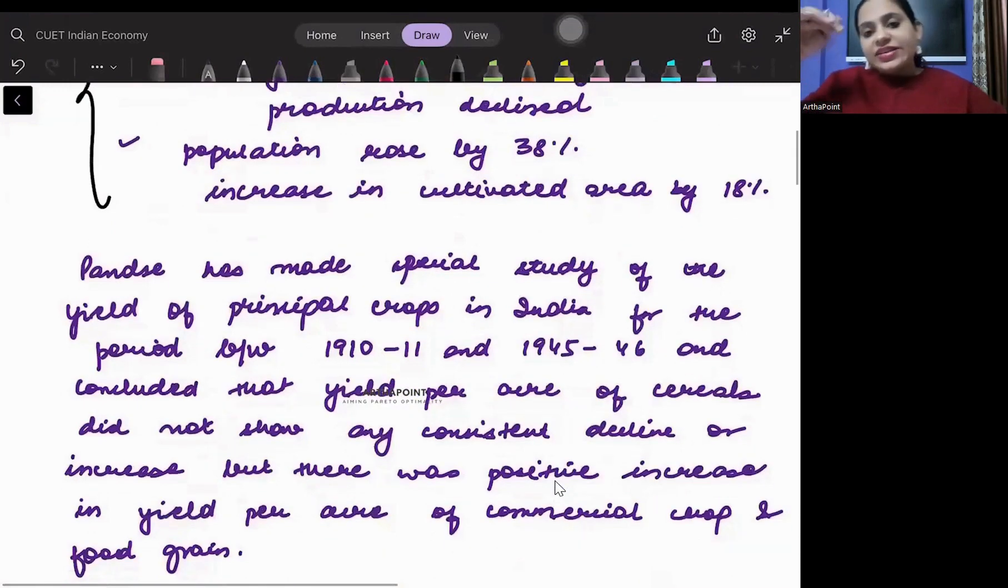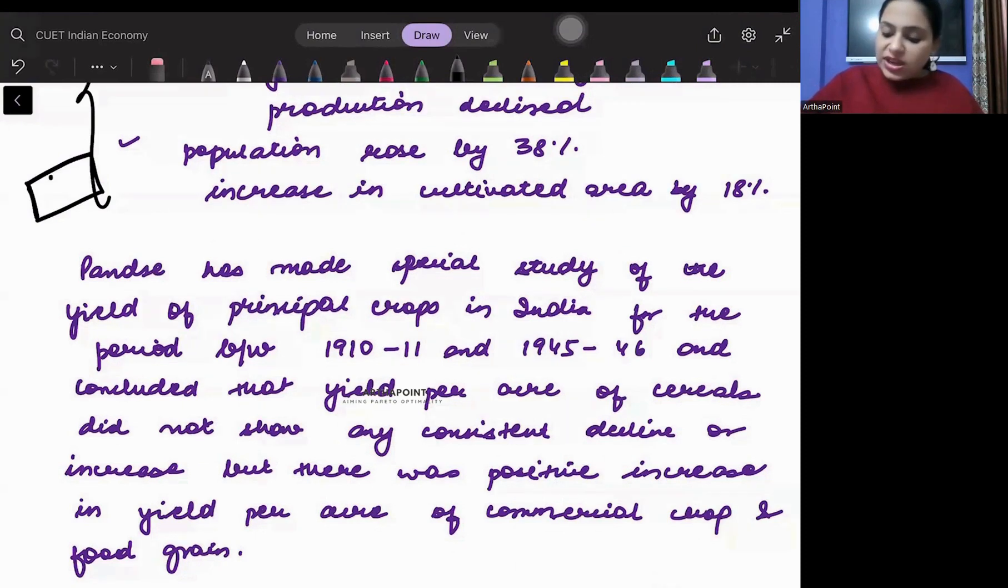At the same time, the population started increasing. If there used to be two sons on one land, now for the same land you will have four sons, eight sons. So per person, the land that they started getting was very less.